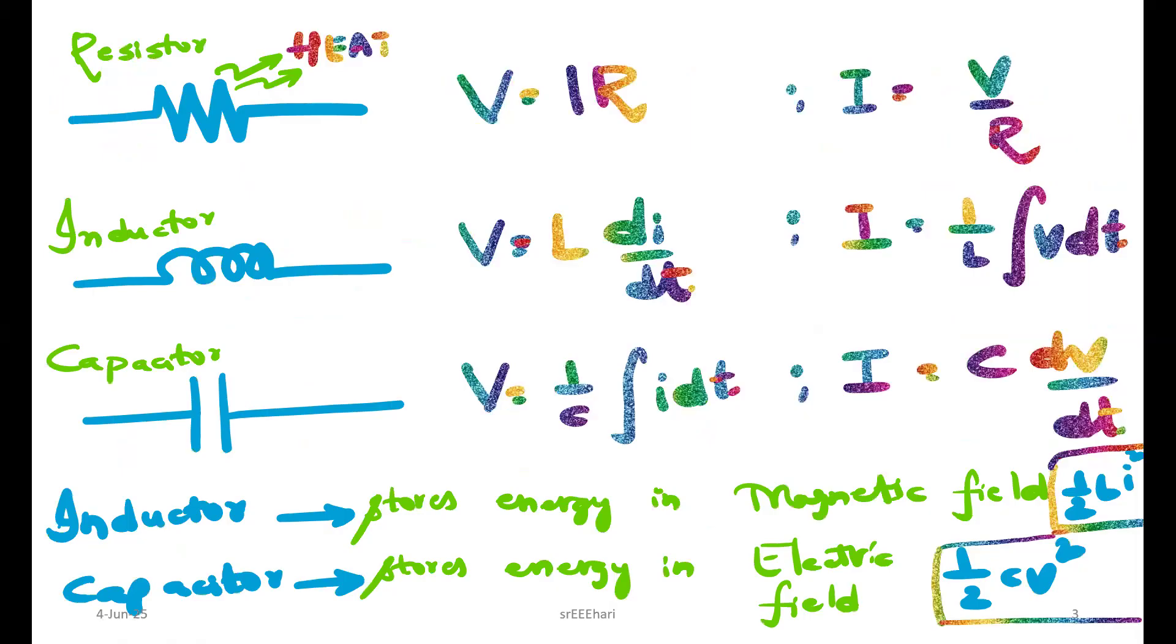These are the different passive elements: resistor, inductor, and capacitor. These are the different voltage equations and current equations for resistor, inductor, and capacitor.